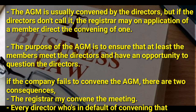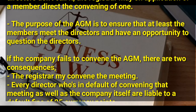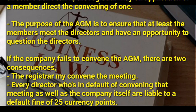The Annual General Meeting is usually convened by the directors, but if the directors do not call it, the registrar may on application of a member direct the convening of one. The purpose of the Annual General Meeting is to ensure that members meet the directors and have an opportunity to question them. If the company fails to convene the AGM, there are two consequences: the registrar may convene the meeting, and every director in default as well as the company itself are liable to a default fine of 25 currency points.